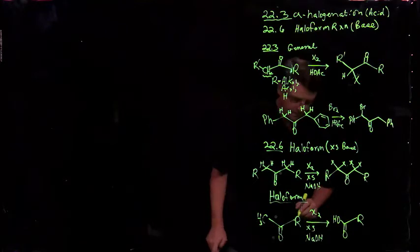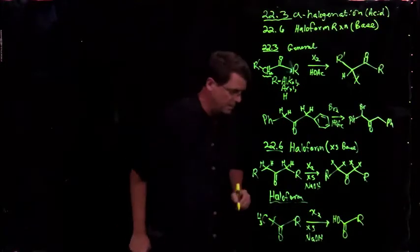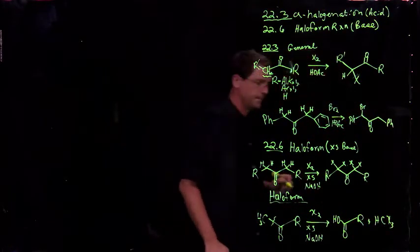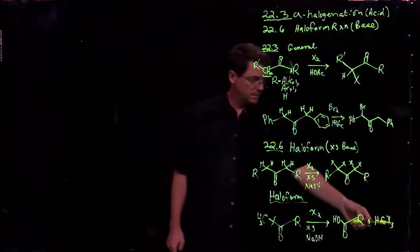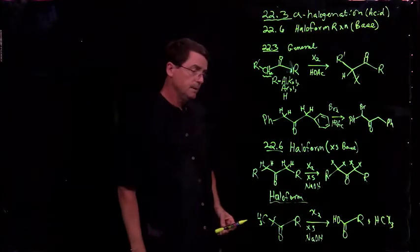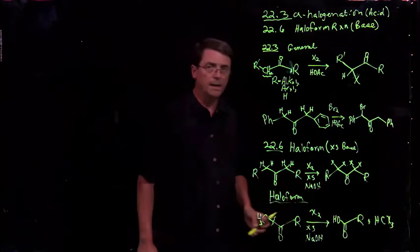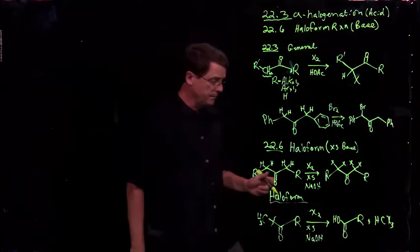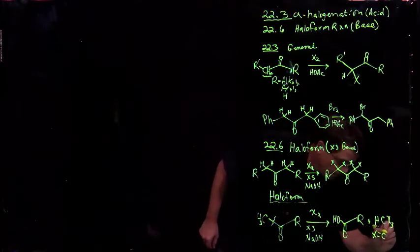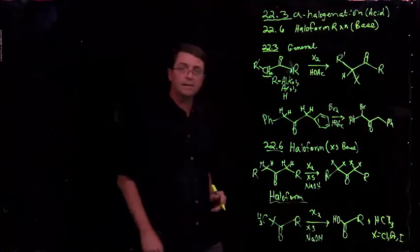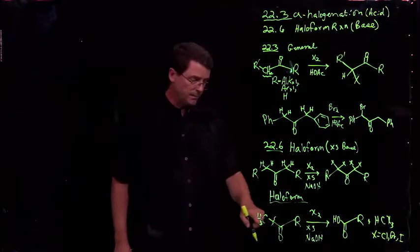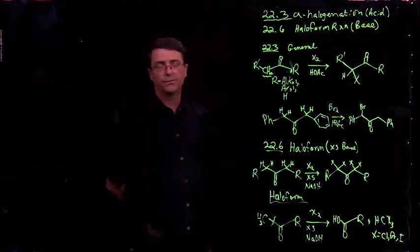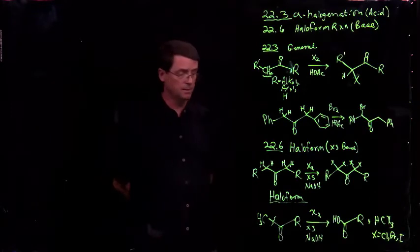And we have carbon carbon bond that gets broken and we make the haloform. So if X were to equal chloride, that would be chloroform. If X equals bromide or bromine, it would be bromoform. And you can do the iodo. In fact, X can equal chloro and iodo. If it's iodide, it's a qualitative test for methyl ketones because iodoform is a bright yellow crystalline solid and it will almost in just a matter of minutes precipitate from solution typically.